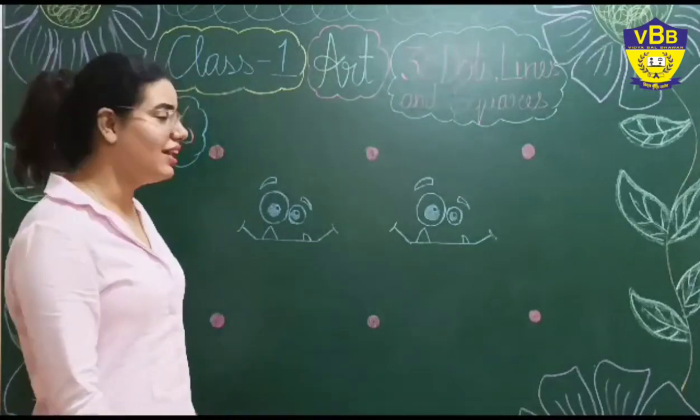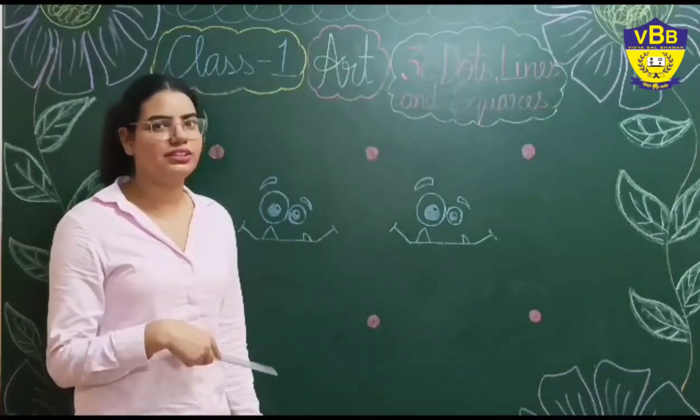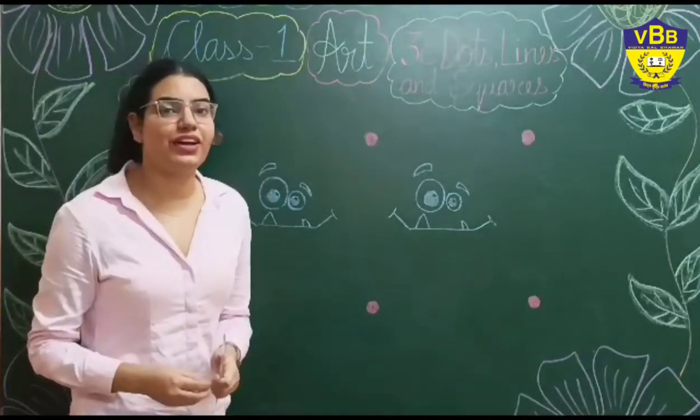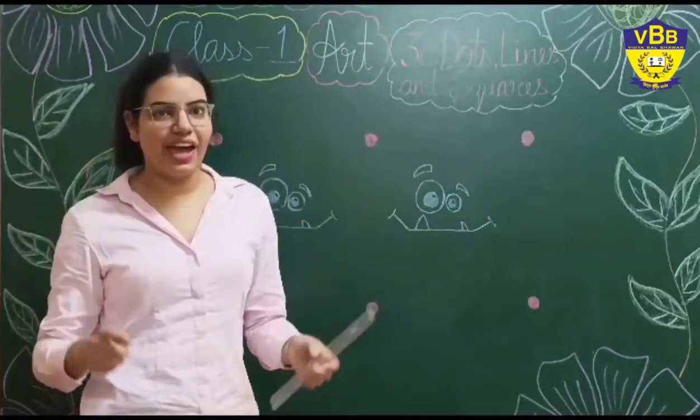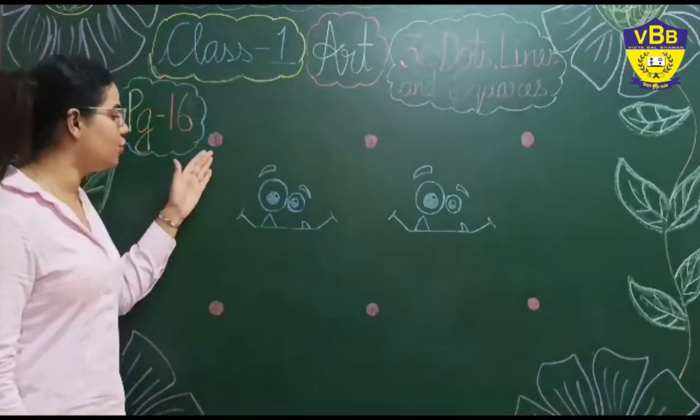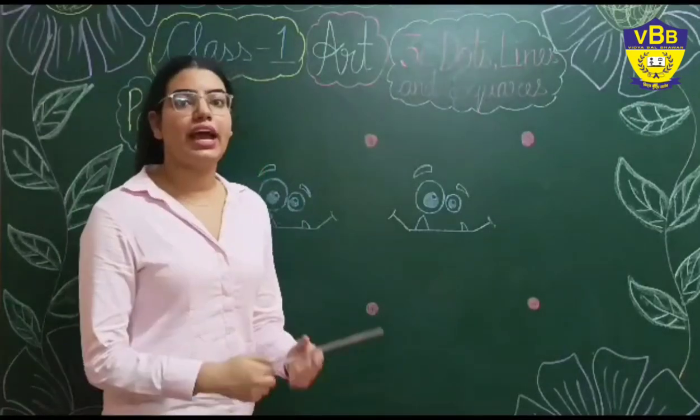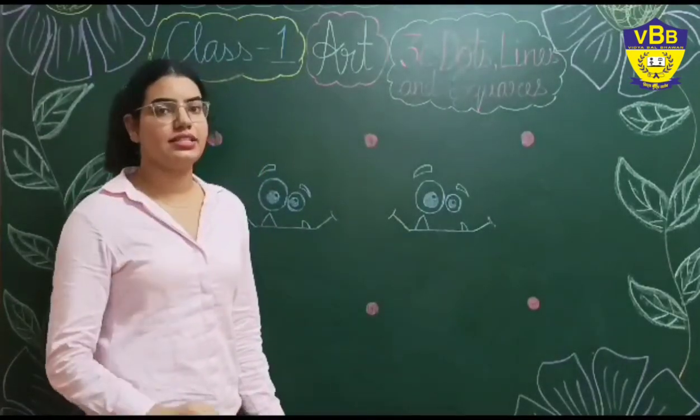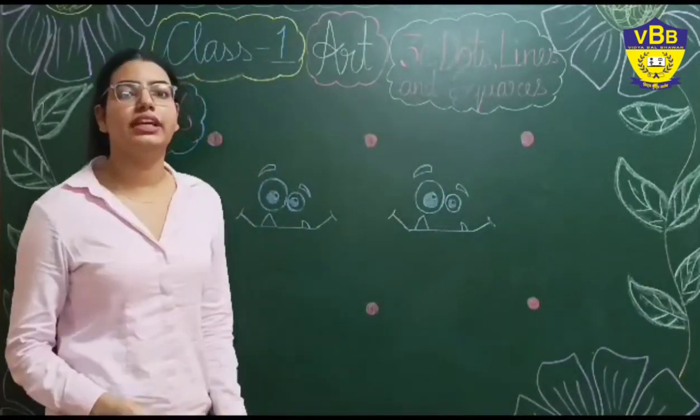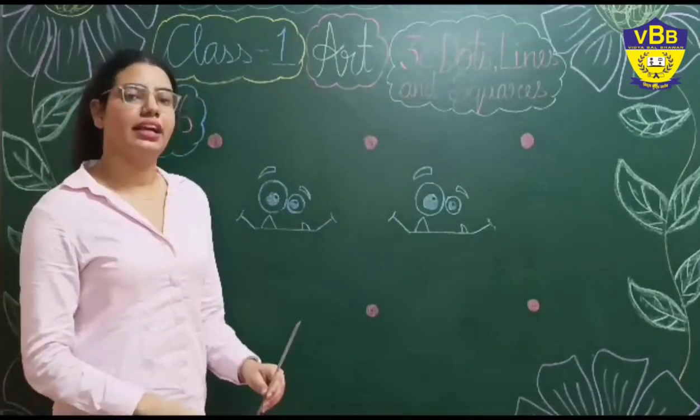Okay. And what else is there? There is a face. Yes. It looks like a monster, right? Now let's draw the monster with a square face. Okay. So now what do we have to do? We have to join these dots using a line. We will join the dots using line. By making line. Correct.